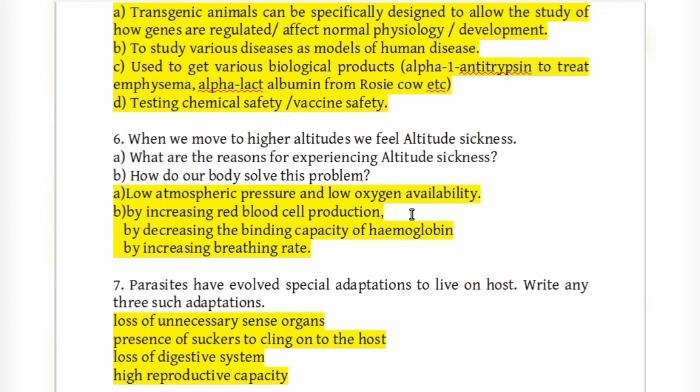At higher altitudes, atmospheric pressure is low and oxygen availability is low. The body overcomes altitude sickness by increasing red blood cell production, decreasing the binding capacity of hemoglobin, and increasing the breathing rate.